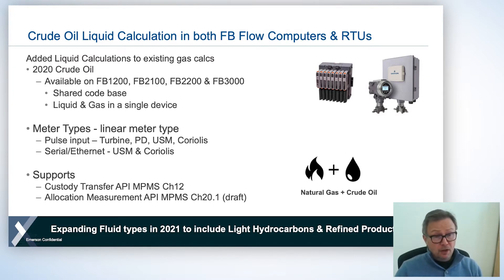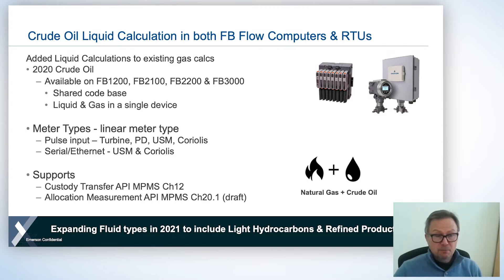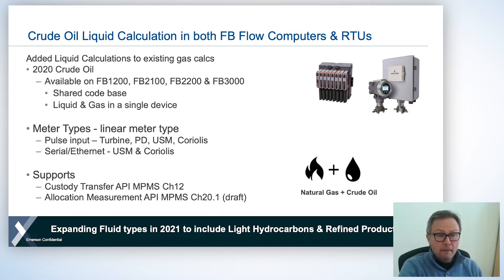We support both custody transfer measurement and allocation measurement. Most of you will be familiar with custody transfer measurement, which is to API Chapter 12. The allocation measurement is to API Chapter 20.1, which is a draft standard at the moment. It's undergoing some major updates with the committee, and we expect it to be published in the next year or so. We've taken it on board to support some of the allocation measurement methods in our standard firmware.